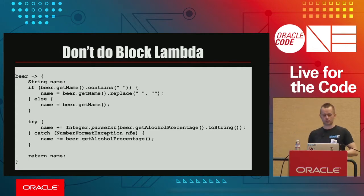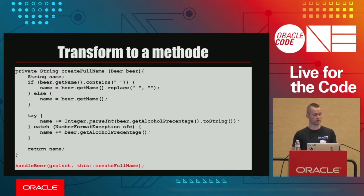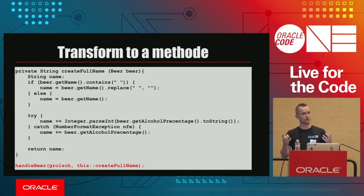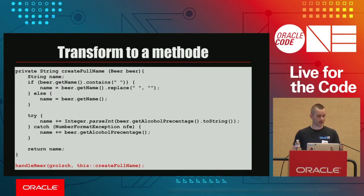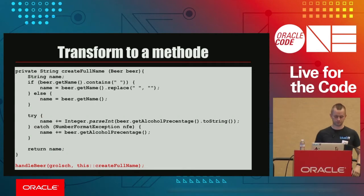So what can you do if you have a block lambda and want to do more in a single lambda? We have methods. Simply transform the lambda into a method and call it with a method reference. Your higher-order function call stays readable. If you give the function a good name that's readable and understandable, things will be more readable than doing a block lambda inline.